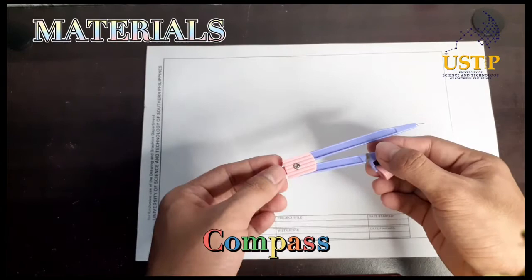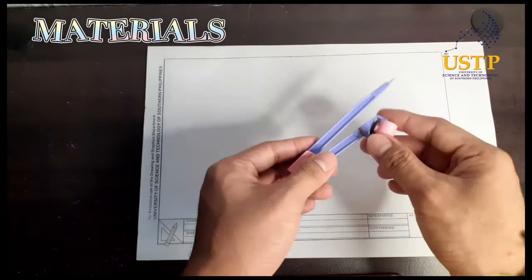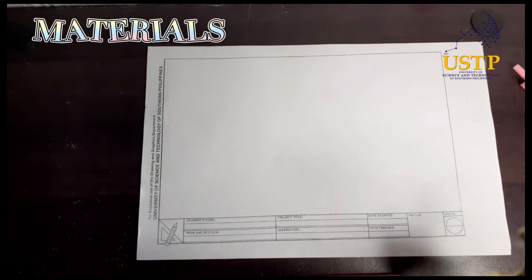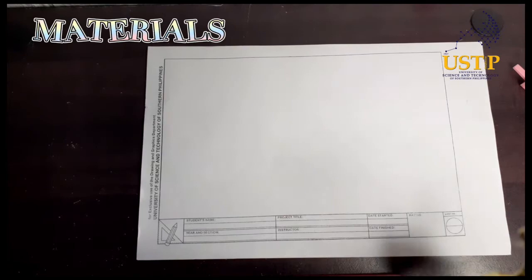And lastly, this compass to create or to achieve a perfect circle. But since this compass doesn't fit my pencil, I have to use an alternative when creating a circle. So I will use this cup to achieve perfect circles.